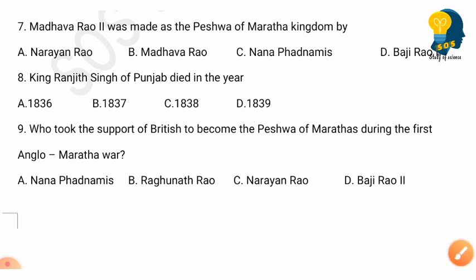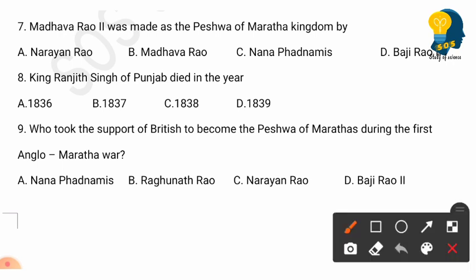Question 9: Who took the support of the British to become the Peshwa of the Marathas during the First Anglo-Maratha War? Options: Nana Phadnavis, Raghunath Rao, Narayan Rao, Bhaji Rao Second. The correct answer is option B: Raghunath Rao took the support of the British to become the Peshwa of the Marathas during the First Anglo-Maratha War.